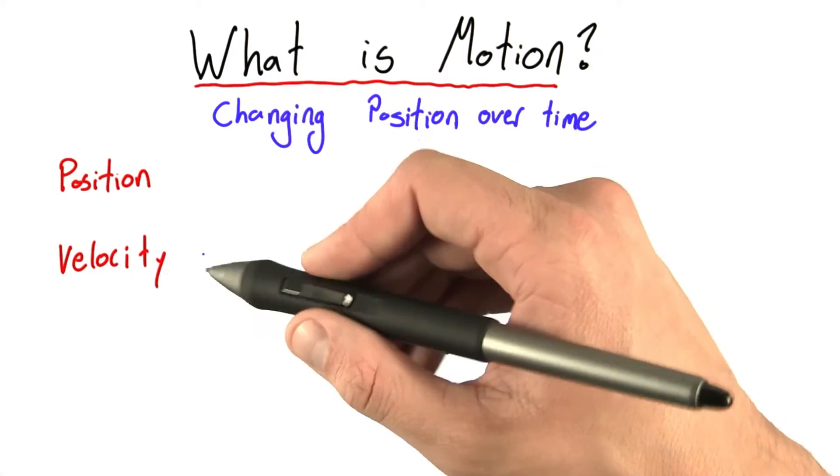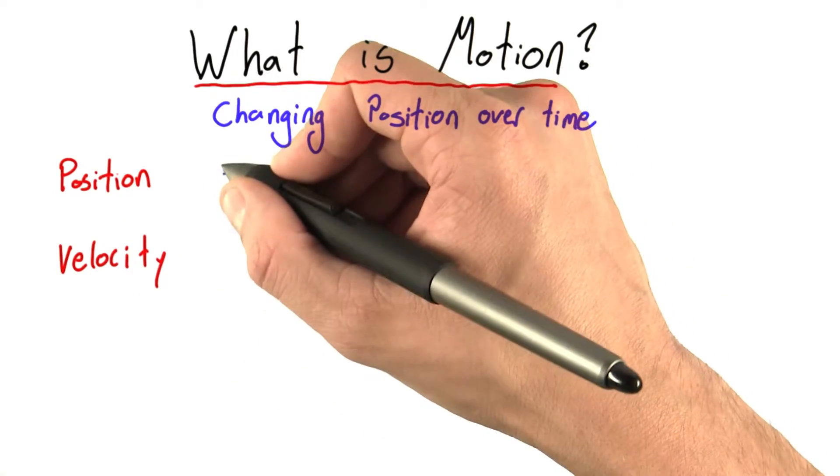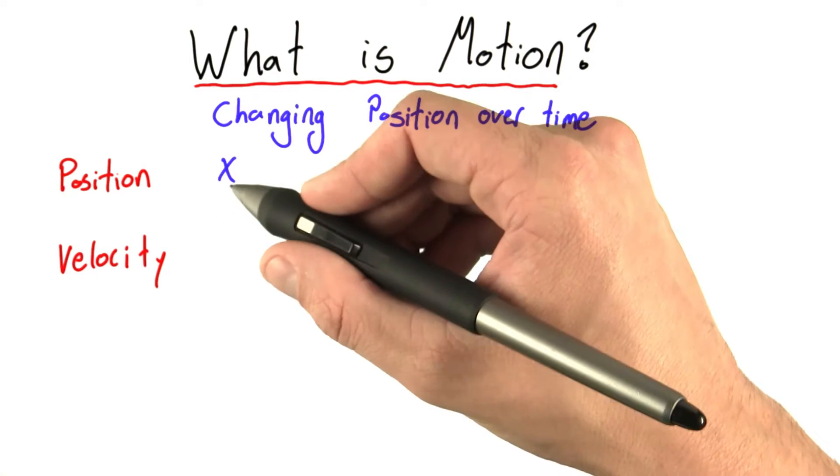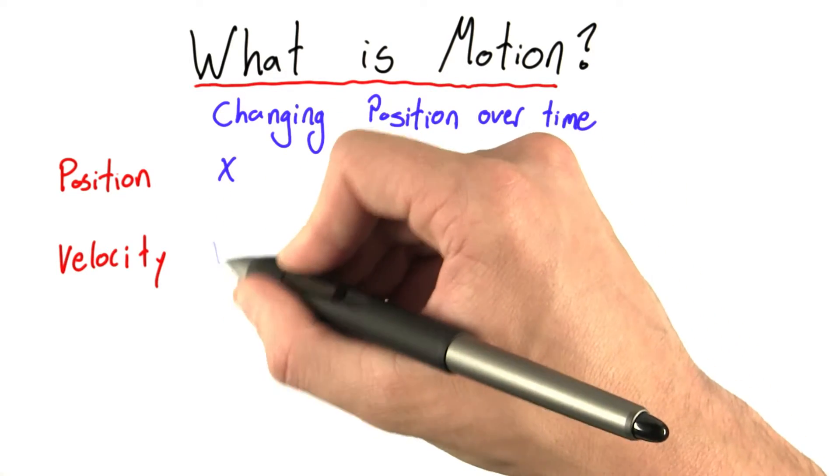We're going to be talking about these quantities so much, let's give them some abbreviations. Position, I'm going to abbreviate with the variable x, and velocity, I'll use the variable v.